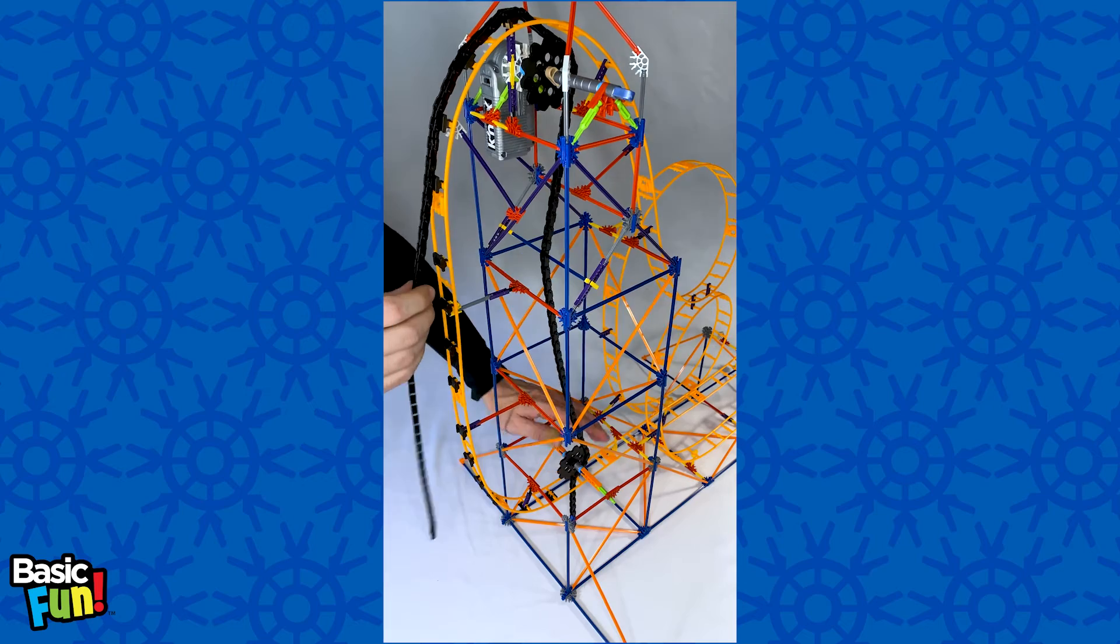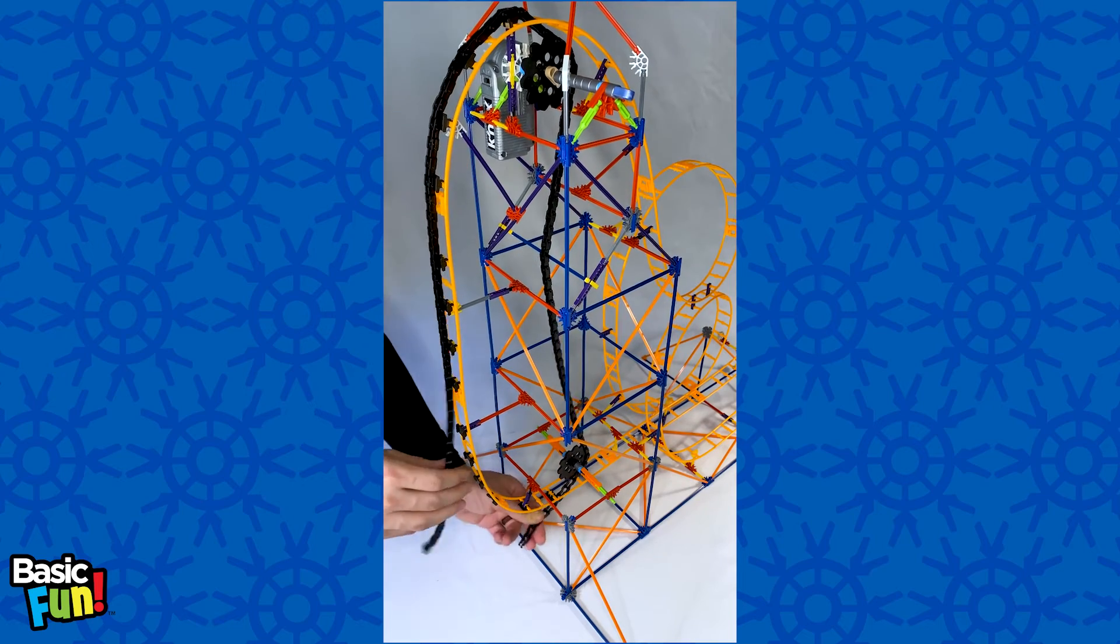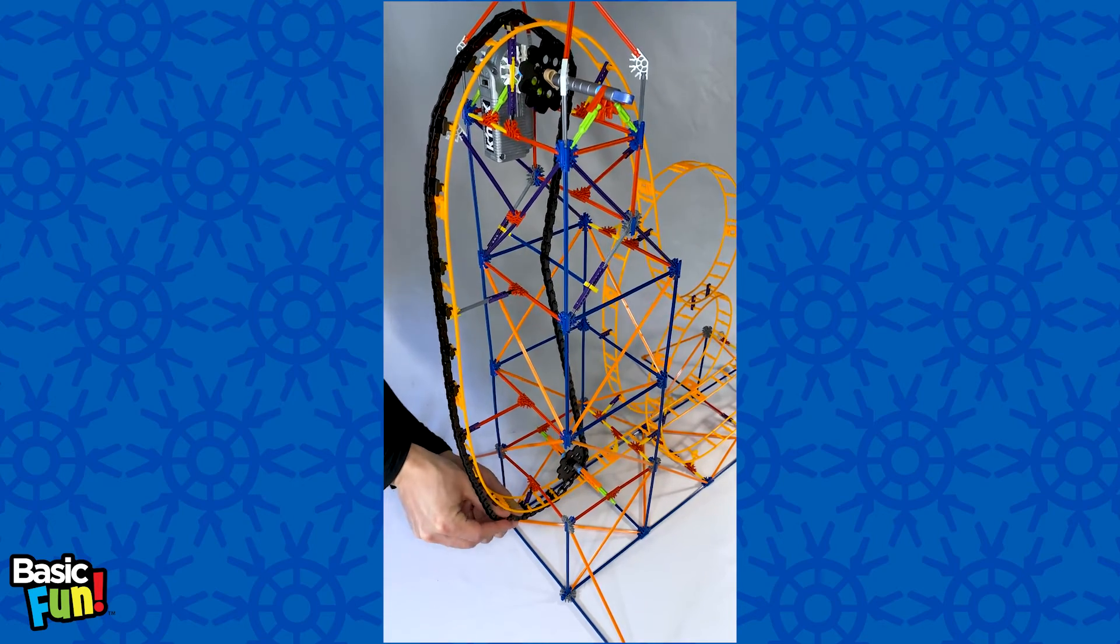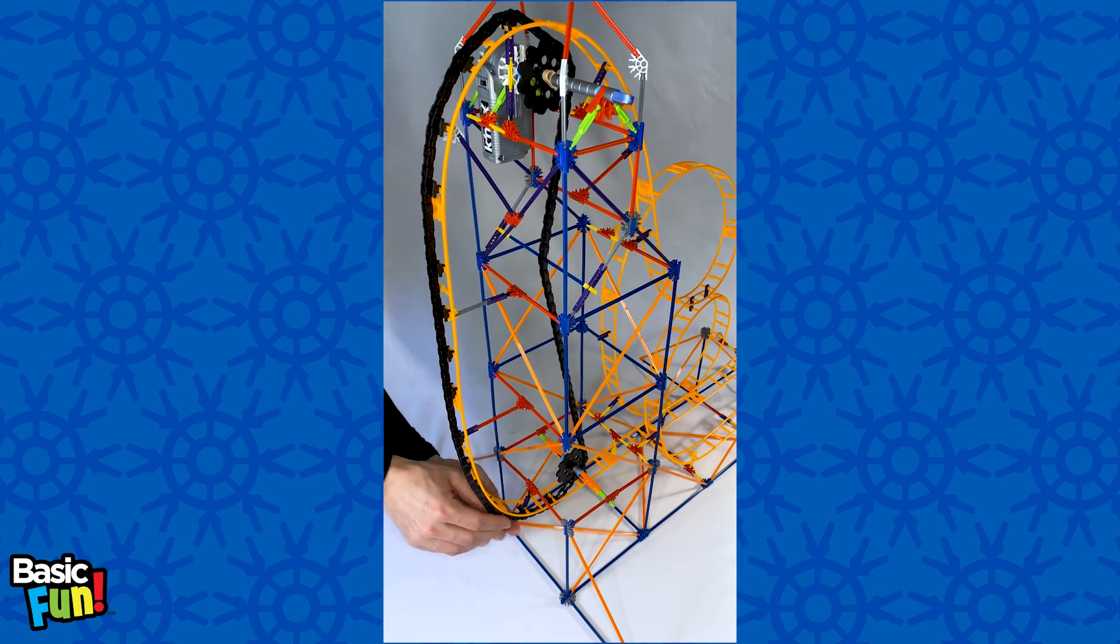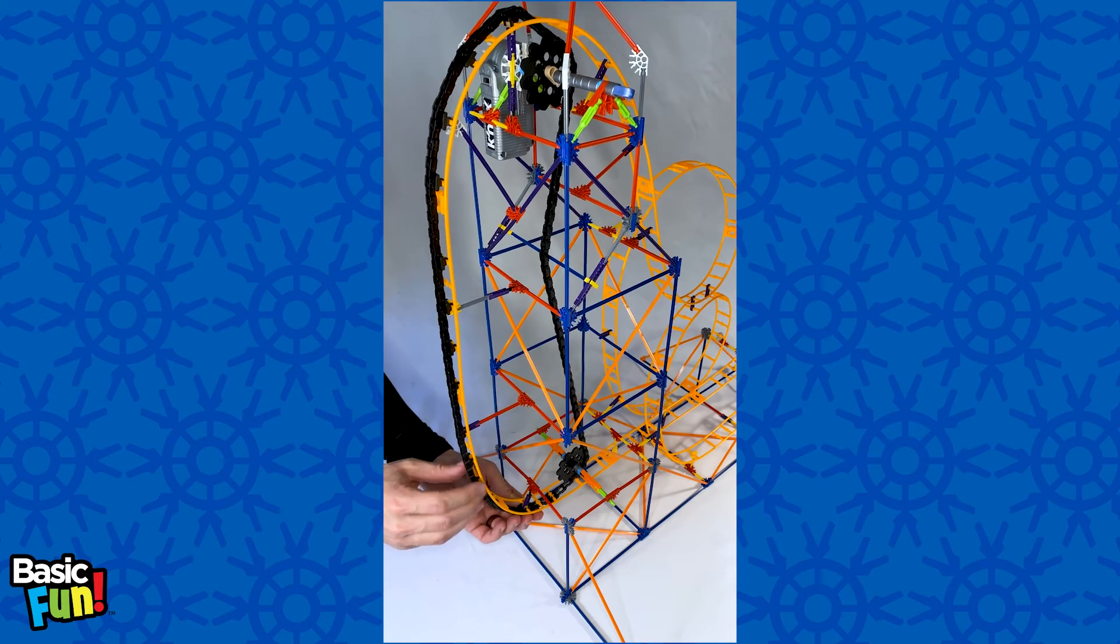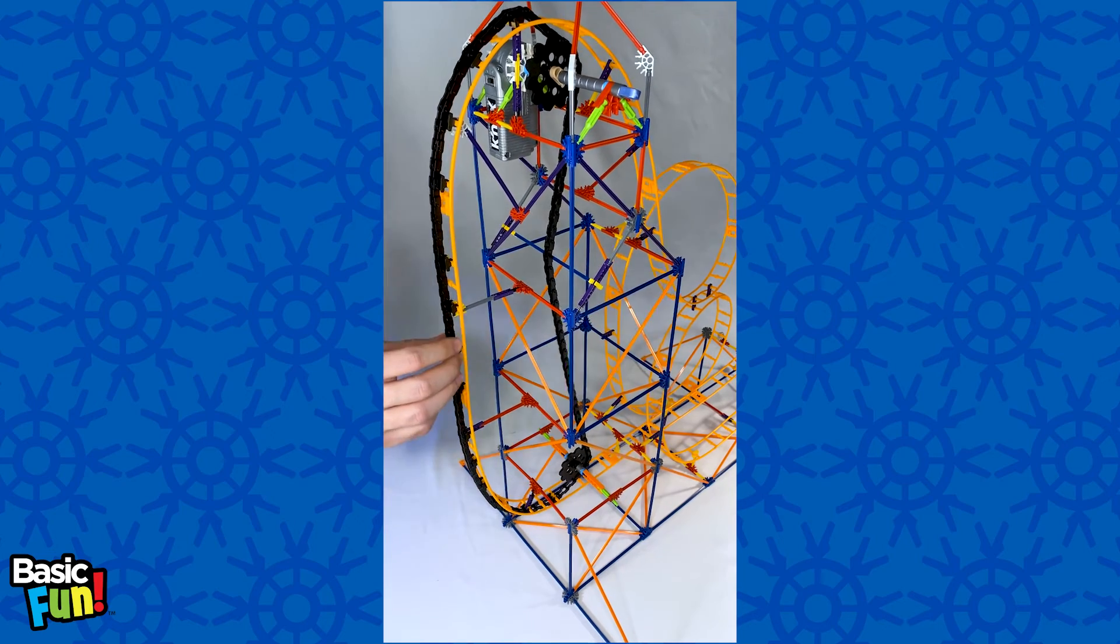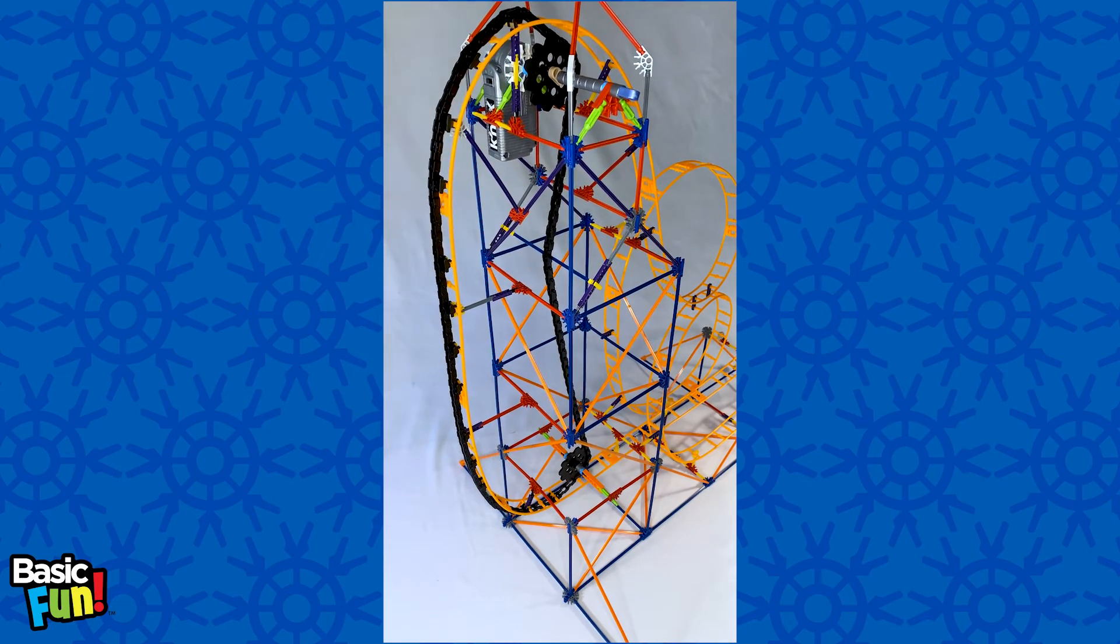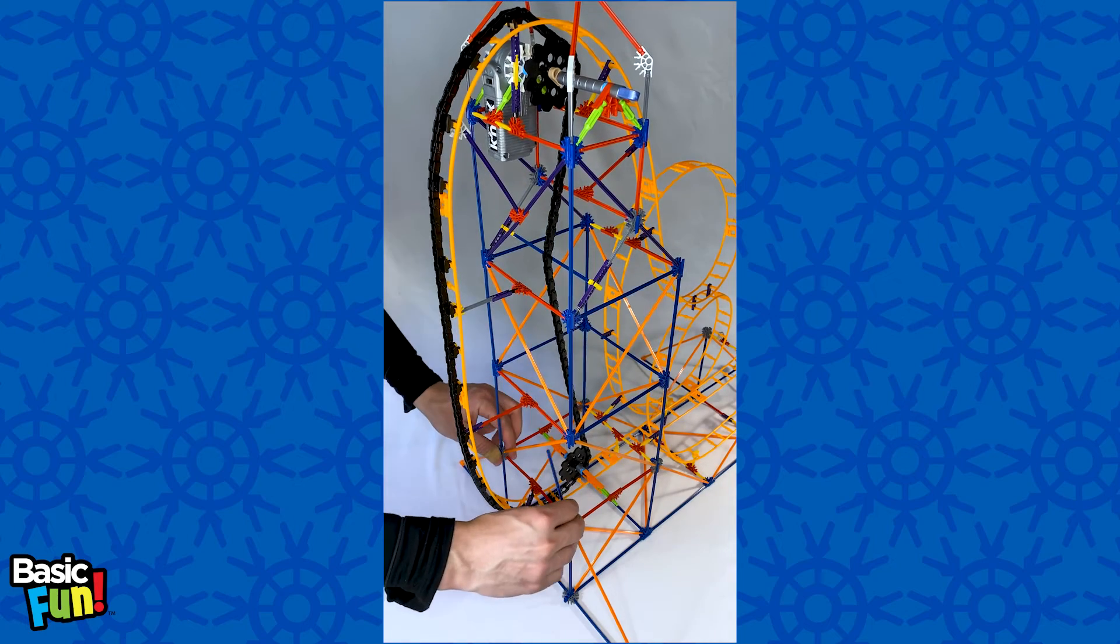Once you get it to this point, all you're going to do is take both ends and then connect them together. And then make sure the chain is running between the chain guards here. At this point I'm going to add this rod back into the structure.